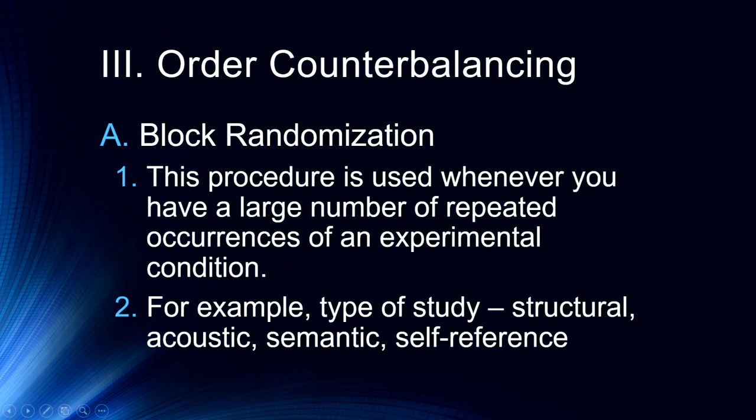Block randomization is used whenever we have a large number of repeated occurrences of an experimental condition. For example, if we were directing people to study items based on their structure (upper or lowercase), acoustic sound (does it rhyme?), semantics (does it fit a sentence?), or self-reference (does this word apply to you?) — these would be four different encoding conditions. We might have 25 of each, for 100 words total, to see which encoding method leads to best memory.